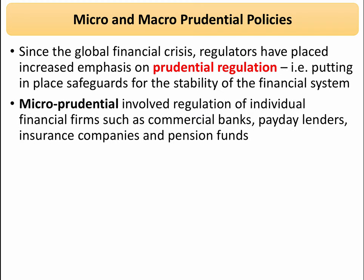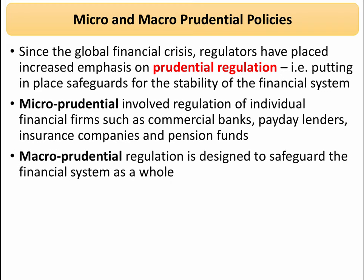So what's the difference between the two? Micro prudential involves the regulation of individual financial businesses — that includes commercial banks, payday lenders, hedge funds, insurance companies, and pension funds. Whereas macro prudential is essentially designed to regulate the financial system as a whole, to mitigate domestic and external risk factors that might affect stability in the financial system, and crucially, people's trust and confidence in finance.